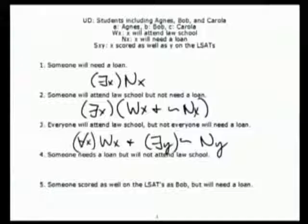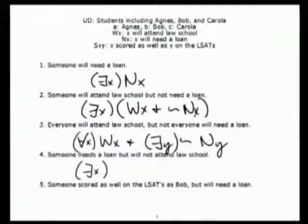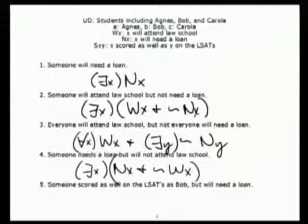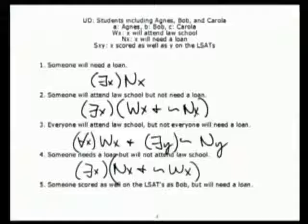Brad, number four. There exists an X such that NX and not WX. Once again, this is a situation where the existential quantifier covers both — it's the same individual who needs a loan and doesn't attend law school, so that quantifier binds the whole thing.